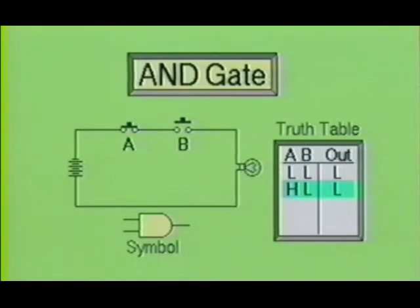Now let's energize switch A and see what happens. When the button on A is pressed, you will notice that the lamp did not turn on. Again, according to our truth table, we now have a high on A, a low on B, and a low at the output.